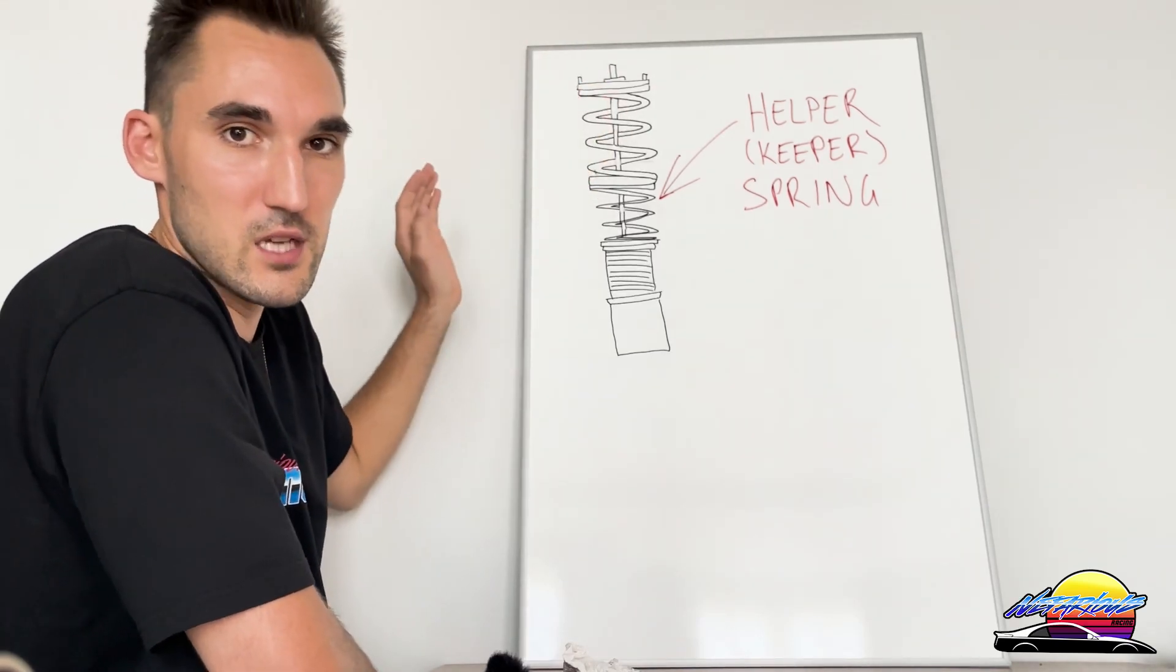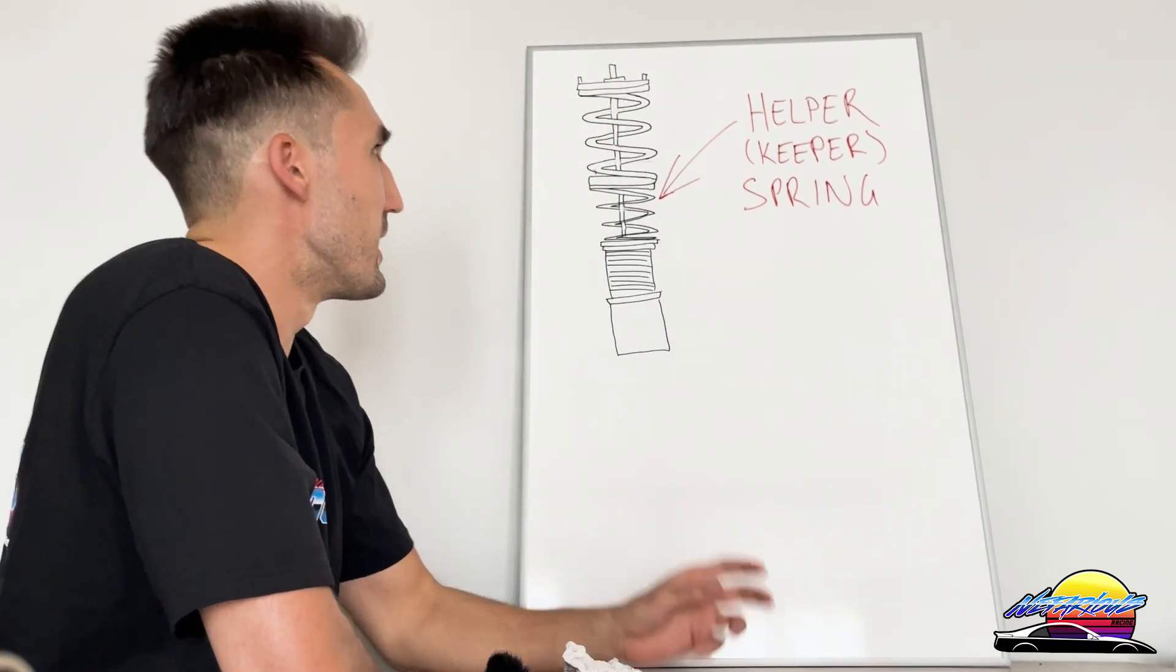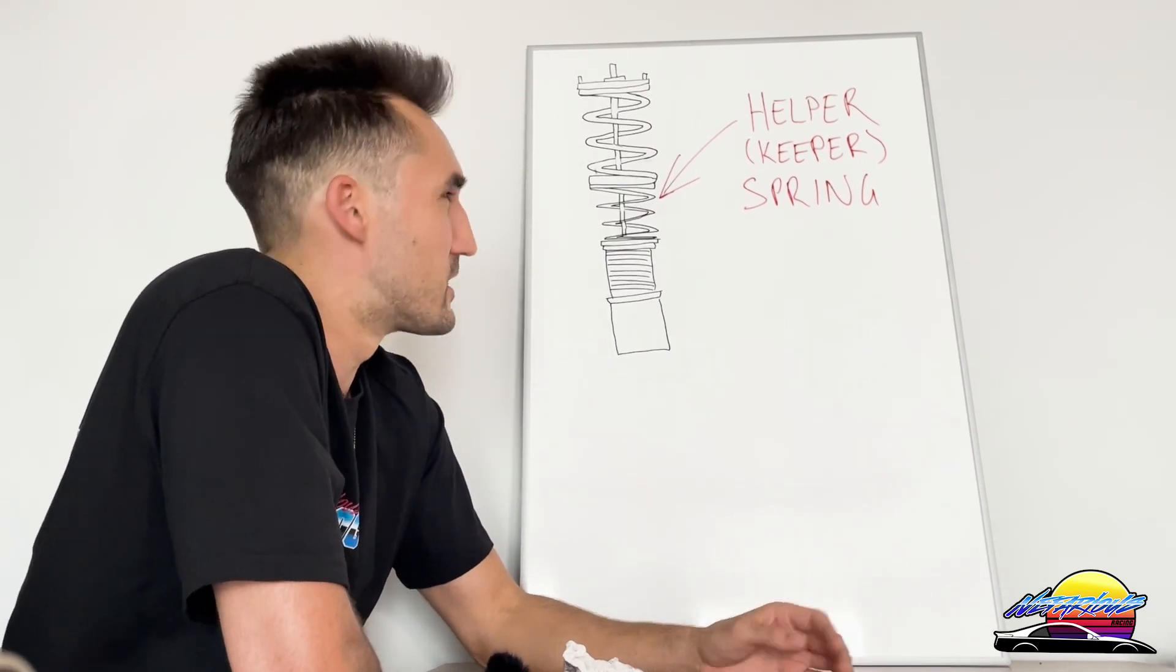Now it's not going to fall off the entire coilover because it's got the damper piston in the middle holding it, but it's possible that it might unseat itself. Realistically it probably won't, but it's a risk that you probably shouldn't take.